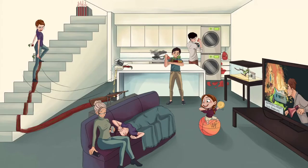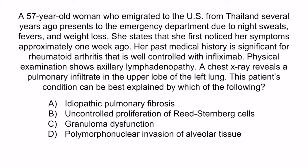From the image, the sleeping person on the couch represents latent TB, and the TNT remote reminds us that TNF-alpha inhibitors can increase the risk of secondary TB by disrupting granuloma formation. A is incorrect — idiopathic pulmonary fibrosis is unlikely to cause fever, night sweats, and weight loss. B is incorrect — Reed-Sternberg cells relate to Hodgkin lymphoma, which can cause B-symptoms but is unlikely to cause pulmonary infiltrates, and this patient's TNF-alpha inhibitor use and origin from Thailand make TB more likely. D is incorrect — polymorphonuclear invasion describes pneumonia, which may cause pulmonary infiltrates but not night sweats and weight loss. The correct answer is C, granuloma dysfunction. This concludes everything you need to know about Mycobacterium tuberculosis.